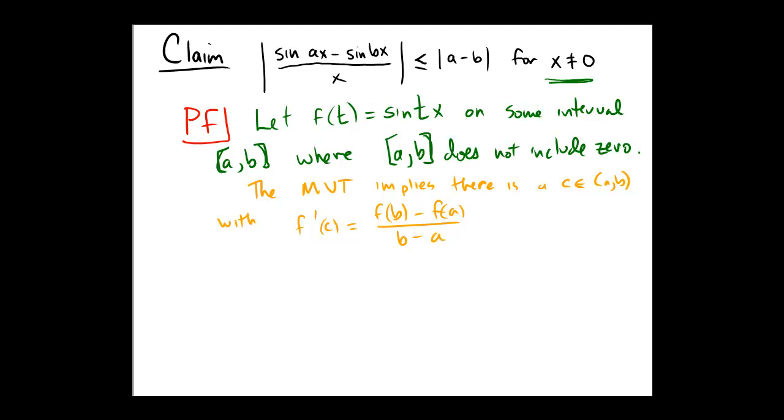By simple substitution, since f(t) equals sine tx, that means f'(c) would be, well let's see, the derivative of sine tx would be cosine tx. But that's evaluated at c, and then that would be multiplied by the derivative of the inside, and the derivative of tx with respect to t would be just x.